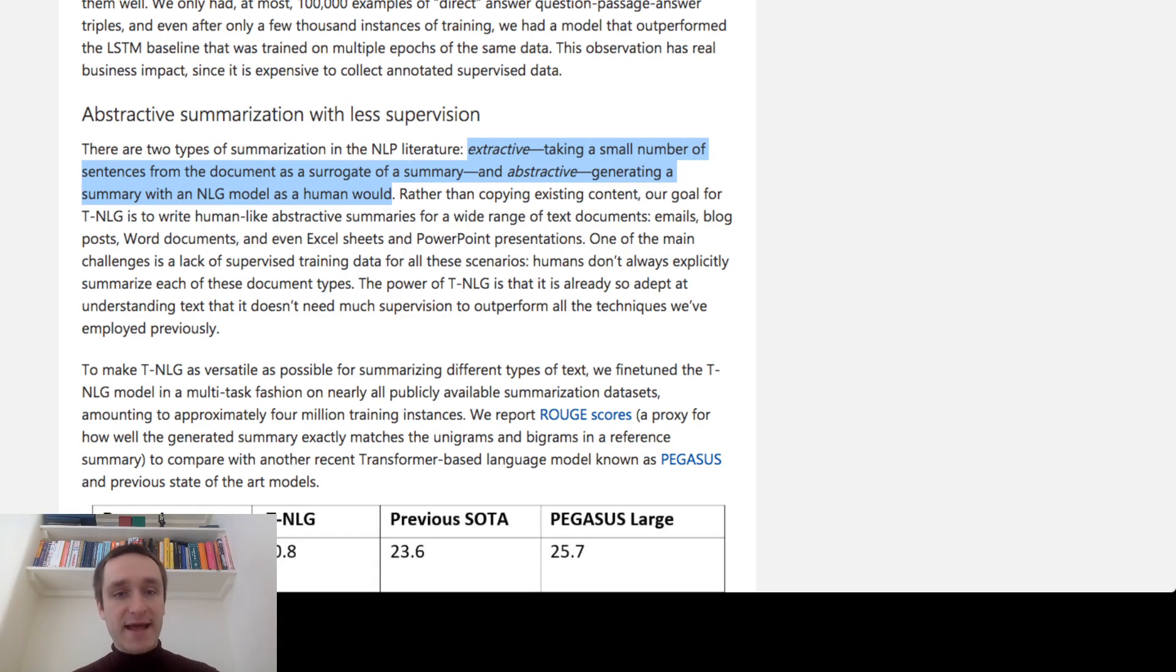Abstractive is what most people are doing when they're thinking about generating a summary, which is trying to write more consistently about the article itself, about the content.